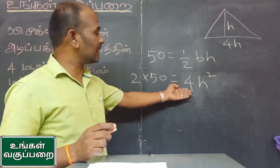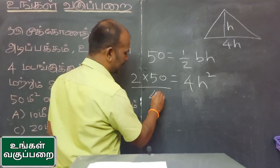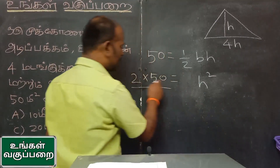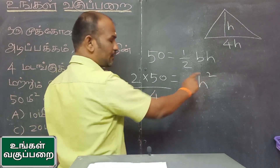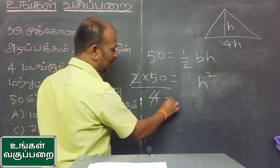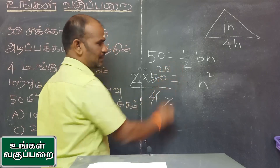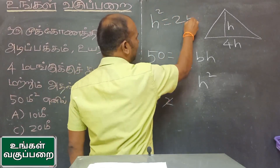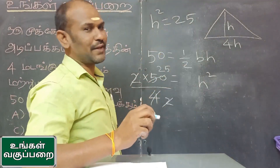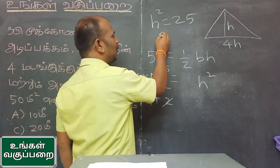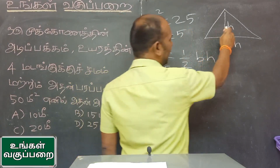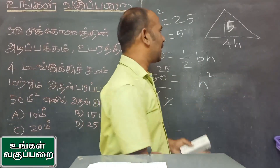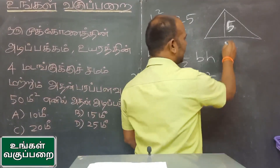The 4 here — we divide by 4, then 2 into 50 divided by 4 equals h squared. Simplifying: h squared equals 25, so h equals 5 meters.